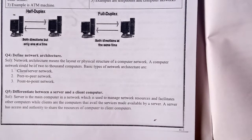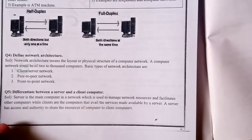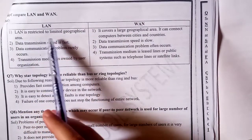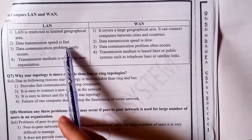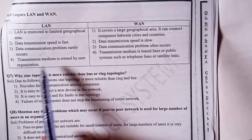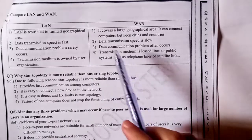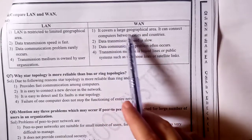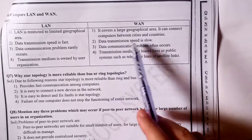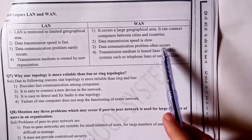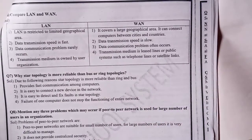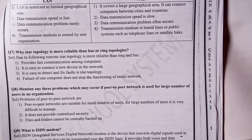Here is the comparison between LAN and WAN. LAN is restricted to a limited geographical area, data transmission speed is fast, and data communication problems rarely occur. The transmission medium is owned by the user or organization. WAN covers a large geographical area, it can connect computers between cities and countries, data transmission speed is lower, data communication problems often occur, and the transmission medium uses leased lines or public systems such as telephone lines or satellite links.